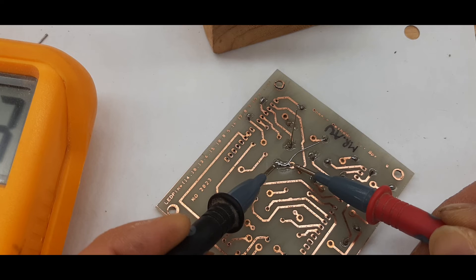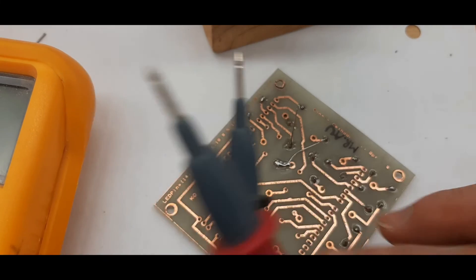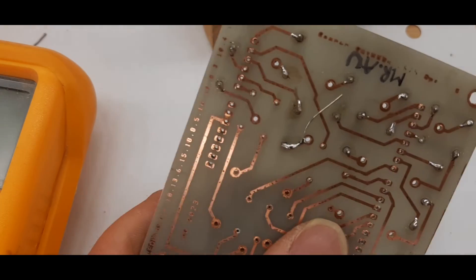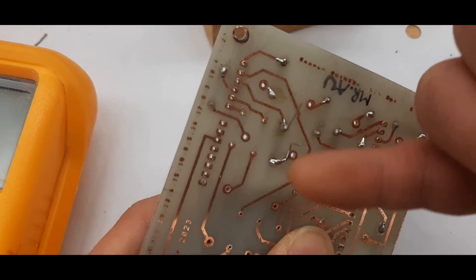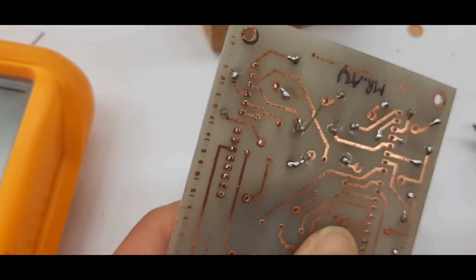We're hearing a beep, which means that these two points are electrically connected, and these two were supposed to be connected, so that's good. I fixed up that patch there. Once you've confirmed that there's an electrical connection, you can go ahead and cut off that lead.